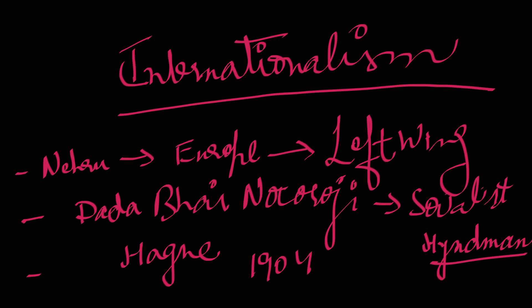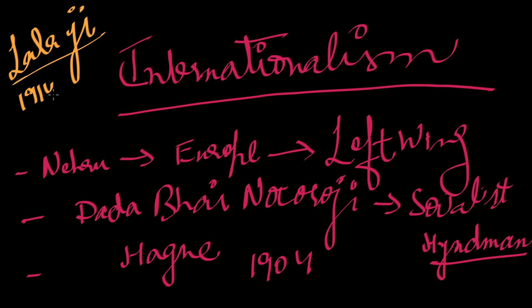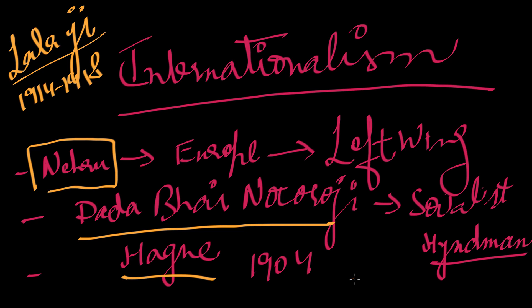Lala Lajpat Rai had a very good friendship with American socialists when he stayed in the USA from 1914 to 1918, and he opposed US participation in World War One. This is how international connections were having an impact on our foreign policy. India's foreign policy is essentially a compilation of what all these individuals were doing — Nehru, Dadabhai Naoroji, the Hague session, and Lala Lajpat Rai.